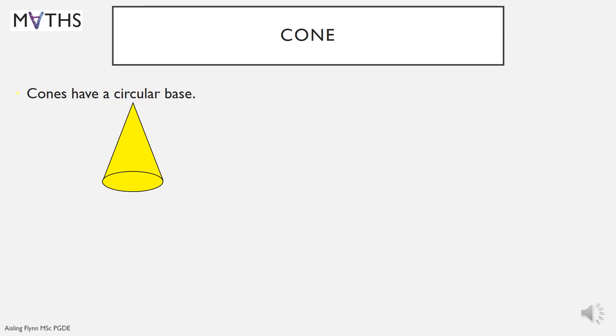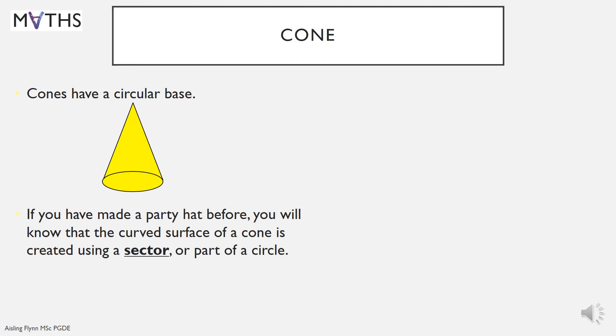Next is a cone. Cones have circular bases. And if you have made a party hat before, you know that the curved surface area of a cone is created using a sector or part of a circle. Like so. So it's not the full circle. And when you fold it over, you make a cone. So the net of a cone is made of a circle for the base and a sector for the sides. That's what the net of a cone looks like.